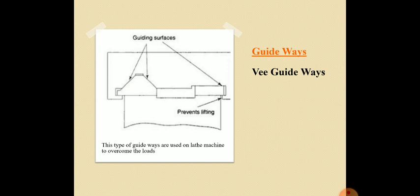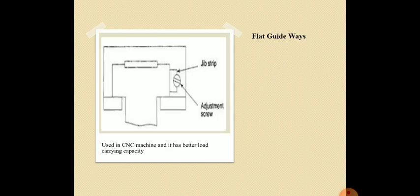As you can see from the figure, the V guideways have guiding surfaces and a knob to prevent the lifting of the guide. This type of guideway is used in lathe machines to overcome the loads. One major advantage of this type of guideway is that during parallel alignment of the guideways, the spindle axis is not affected by wear.